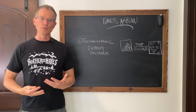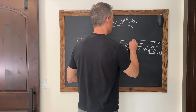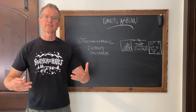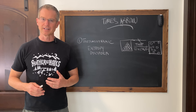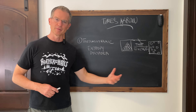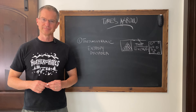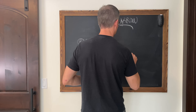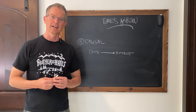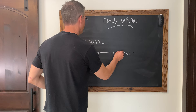Since entropy only moves in one direction, time only moves in one direction. Entropy never spontaneously reverses, and so that, very briefly, is the thermodynamic arrow of time theory: because entropy always moves toward greater disorder, time also only moves in one direction.